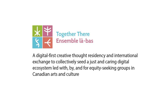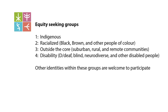Equity-seeking groups for this project includes four priority communities. One, Indigenous people. Two, racialized black, brown, and other people of color. Three, outside the core, including suburban, rural, and remote communities. And four, deaf, blind, neurodivergent, and other disabled people. Individuals with intersectional identities and backgrounds that span more than one of these or other diverse groups are most welcome to participate. For example, 2SLGBTQ+, New Canadians, youth, women, gig economy workers, official language minorities, and other diverse communities that also belong to one or more of our four main priority groups are all encouraged to participate.